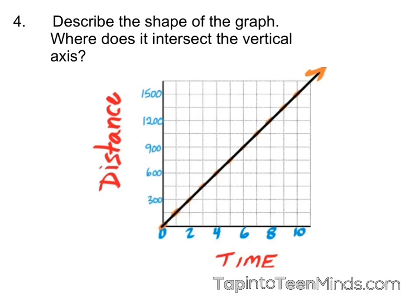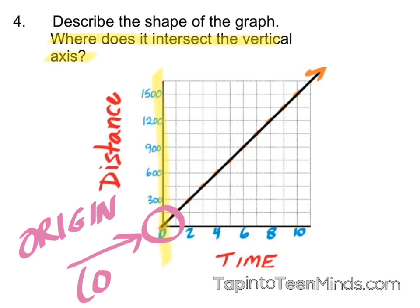Our graph is clearly linear, so when we see the shape of the graph, we would say that it is a linear graph or a straight line. Some people would say it's rising to the right. From our linear relationships unit, we know that this is a strong relationship, and actually even better than strong, it is a perfect positive relationship. When it comes to where it intersects the vertical axis, the vertical axis is the y-axis, the axis that goes up and down. So essentially what they are asking us is where does it hit the y-axis, and we know that it hits the y-axis at the origin or zero comma zero.